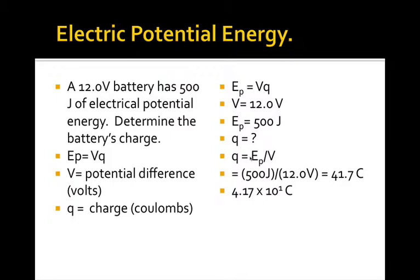So we will rearrange our equation to isolate the variable we're looking for. So Q will equal EP over V. So then we can substitute into that rearranged equation, and we'll get 500 joules divided by 12.0 volts gives me 41.7 coulombs. Now when I take a look at my original information, I have three significant digits here and three, so my answer I will express in three significant digits. So I could leave it as 41.7 or put it into scientific notation, say, 4.17 times 10 to the 1 coulombs. It's good to get into the habit of putting it into scientific notation, because on diploma exams, that's almost always what they require.